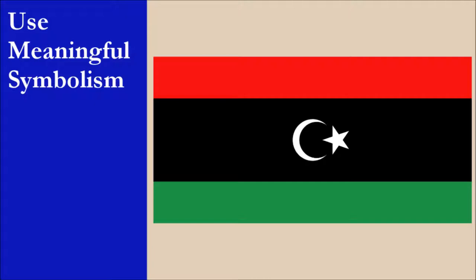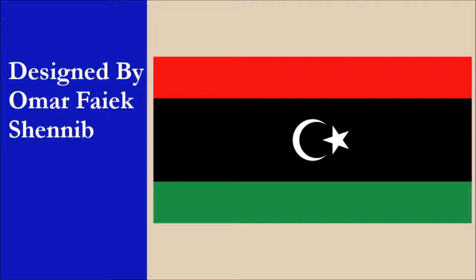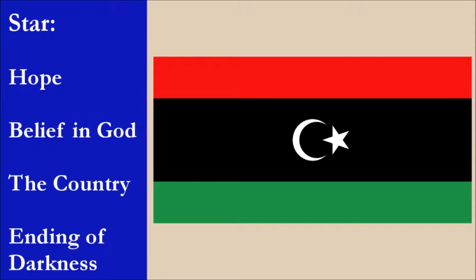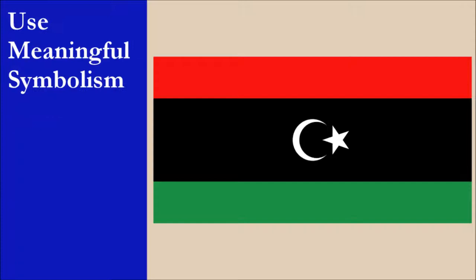The flag was adopted in 2011 after the overthrow of the Gaddafi regime, though the flag was originally adopted in 1951 by the Kingdom of Libya. The current flag replaced the plain green-colored flag used under Colonel Gaddafi, which was without doubt the worst sovereign flag flown during its time. The flag was designed by Omar Fayyik Shanib, a Libyan politician and member of a prominent noble family. An official government document states the meaning behind the flag. The crescent symbolizes the beginning of the lunar month according to the Muslim calendar, and also serves as a reminder of the migration of the Prophet Muhammad and his spreading of the religion. The star symbolizes hope, belief in God, the country, and the ending of darkness.